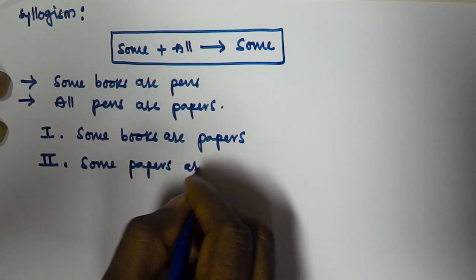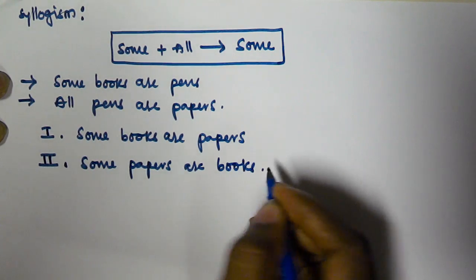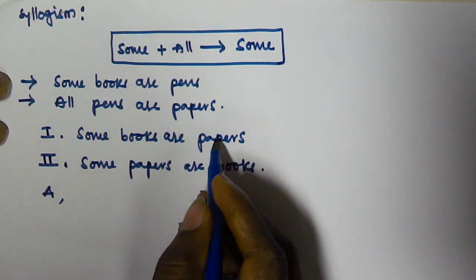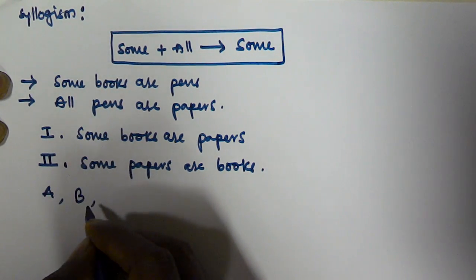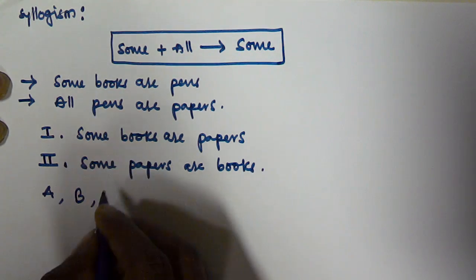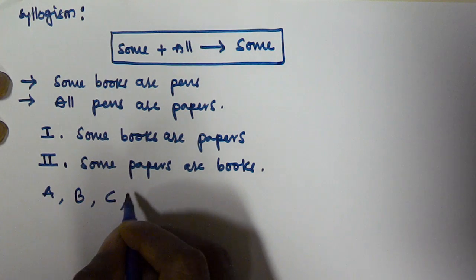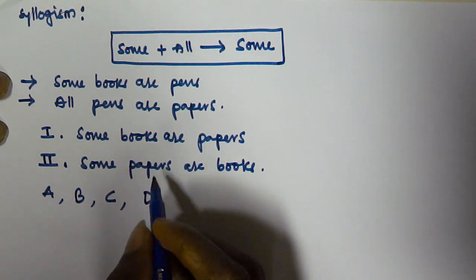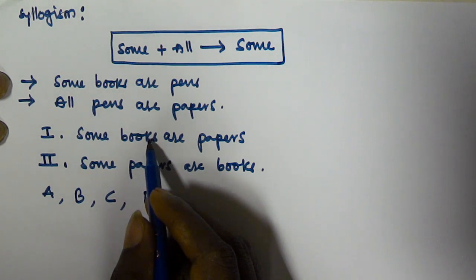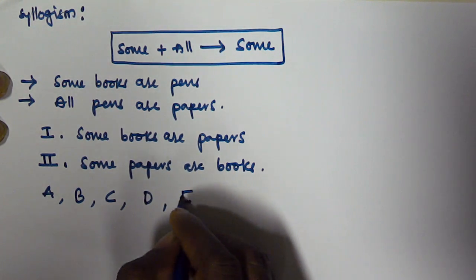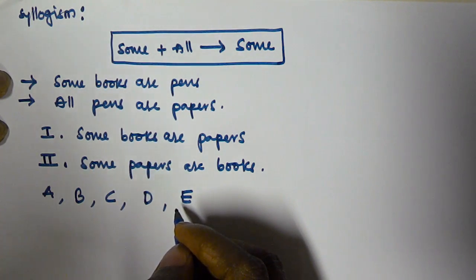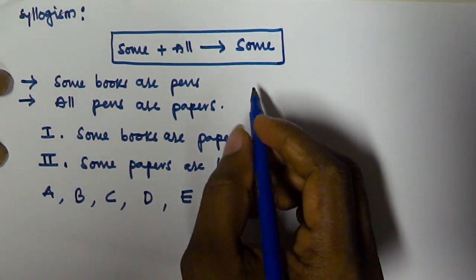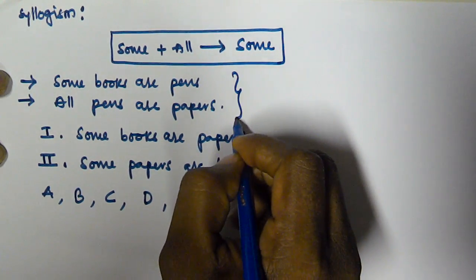The second conclusion given is: some papers are books. You have to select option A if conclusion 1 alone is true, B if conclusion 2 alone is true, C if either 1 or 2 is true, D if neither conclusion is true, and E if both conclusions are true.